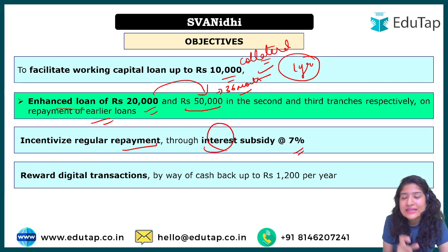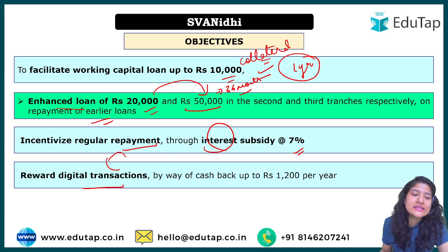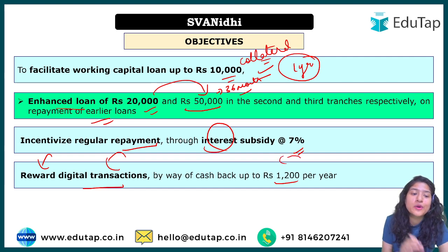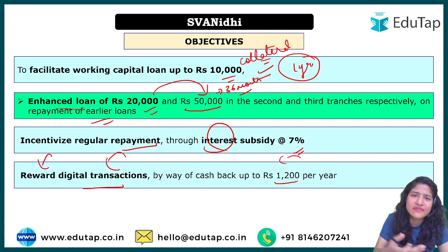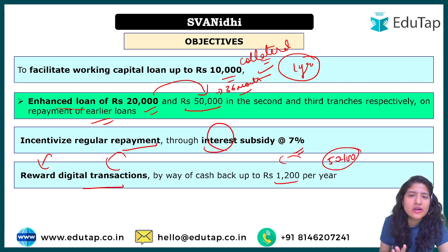The government is also focusing on digitalization. If street vendors promote digital transactions instead of cash, rewards will be given to them. Per year, street vendors can gain up to ₹1,200 by promoting digital transactions. On a per-month basis: for the first 50 transactions you get around ₹50, the next 50 gives ₹25 extra, and the next 100 gives another ₹25. So approximately ₹50 to ₹100 per month, and around ₹1,200 per year.